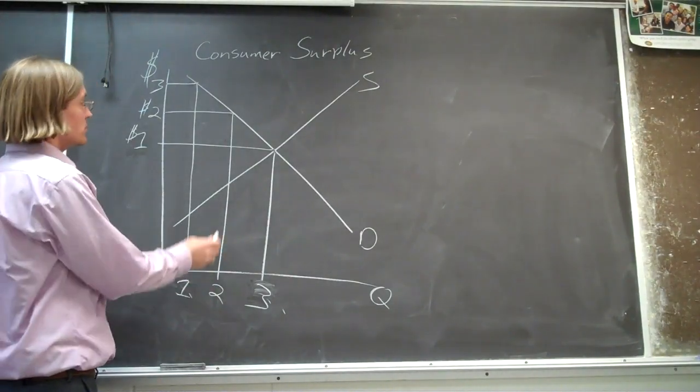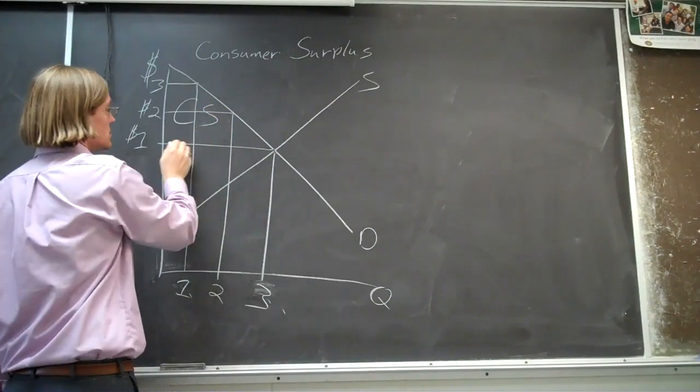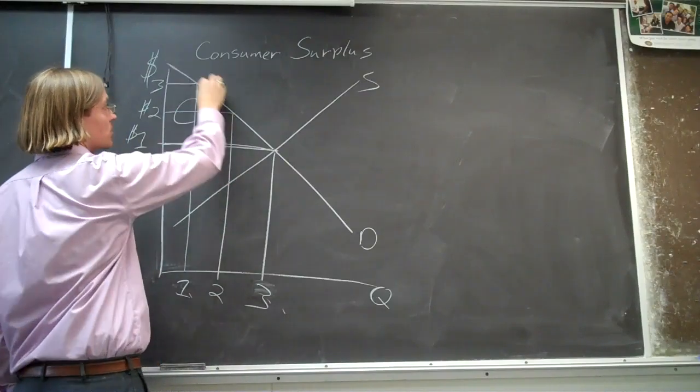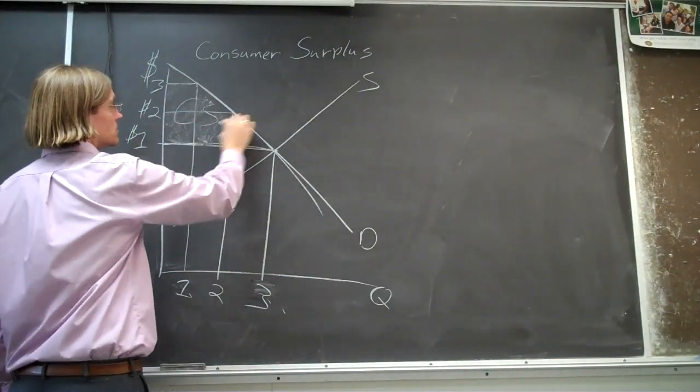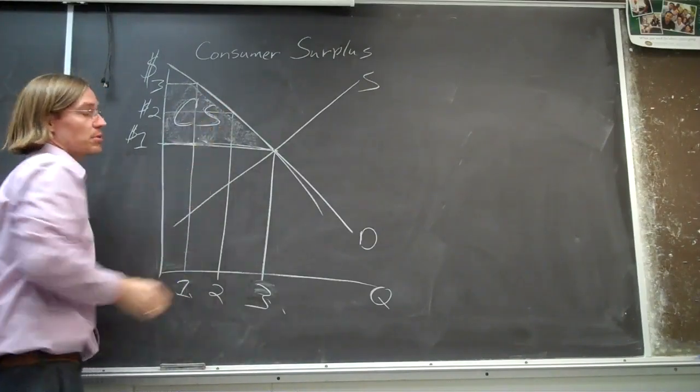And the sum of your consumer surplus is above the price, above the equilibrium price and below the demand curve. So that triangle is your consumer surplus.